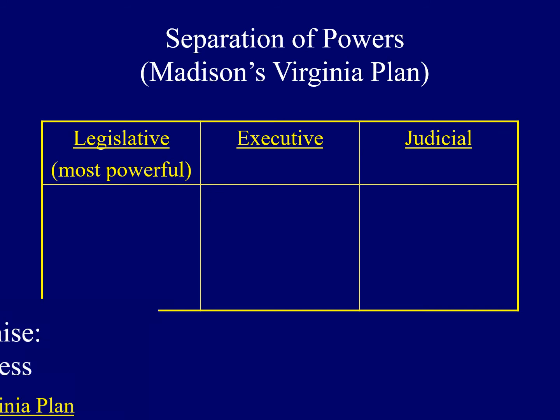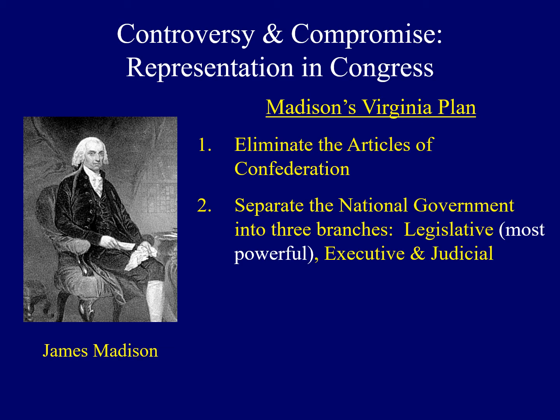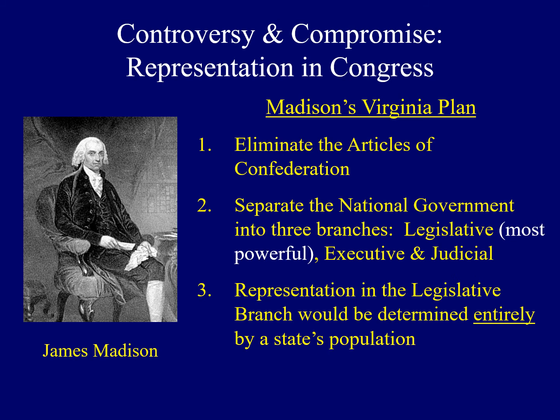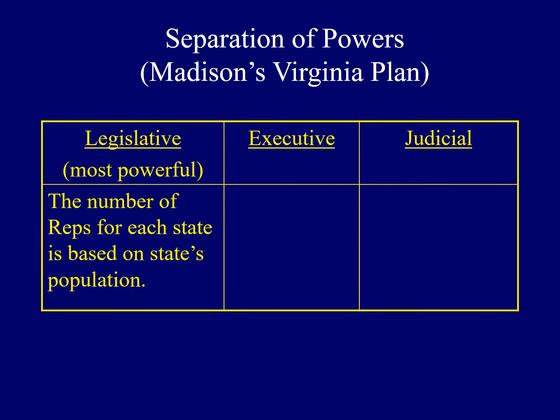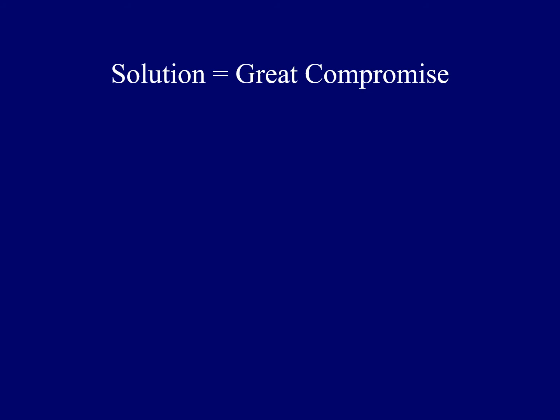While those first two proposals met with approval, Madison's third main idea was very controversial. He argued that representation in the legislative branch should be determined entirely by each state's population — meaning the number of representatives for each state would be determined entirely by population. The big states thought this was a good idea, but individuals from small states disagreed wholeheartedly. They would lose a lot of power under this new system, and the success of the convention was threatened by this issue.